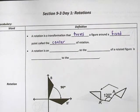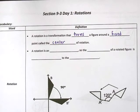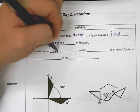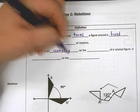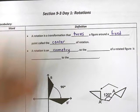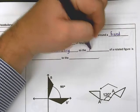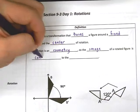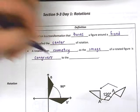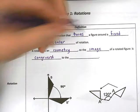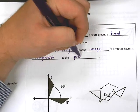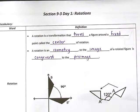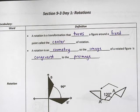The other thing that we need to keep in mind, just like reflections and just like translations, is that a rotation is an isometry. So, the image of a rotated figure is congruent to the pre-image. That is important, and you'll see that on the next page.